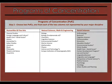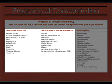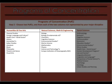Look at the columns for the humanities and fine arts and the natural sciences, math and engineering disciplines. Choose your two programs of concentration by choosing one of the programs of concentration listed in each column.